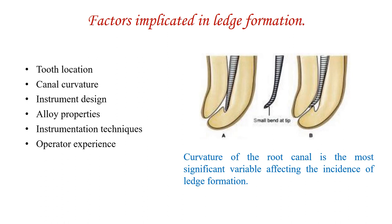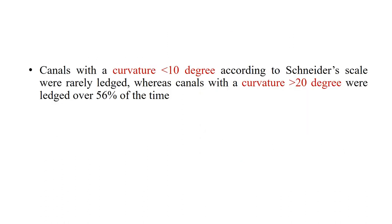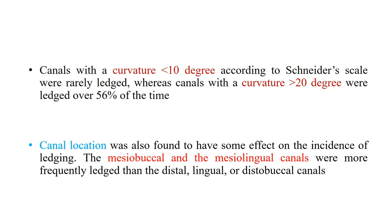Canal curvature is the most significant variable affecting the incidence of ledge formation. Canals with a curvature of less than 10 degrees according to Schneider's scale were rarely ledged, but canals with a curvature of more than 20 degrees were ledged over 56% of the time. The mesiobuccal and mesiolingual canals were more frequently ledged than the distal or distobuccal canals because they are more curved and very narrow.